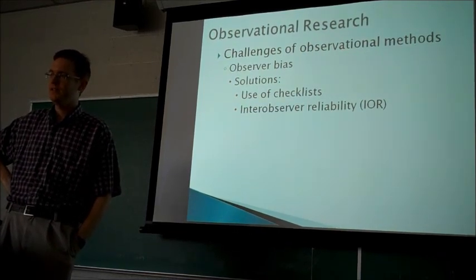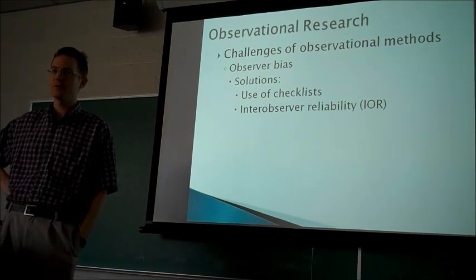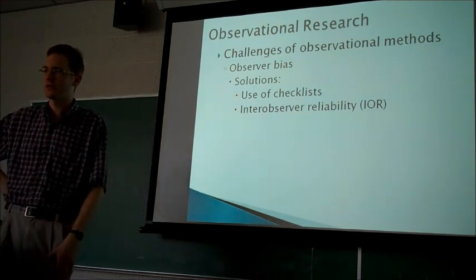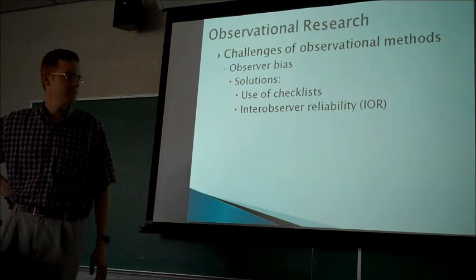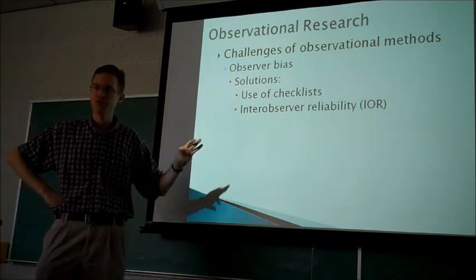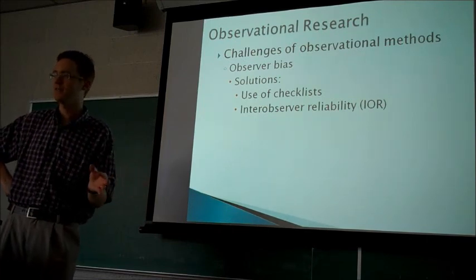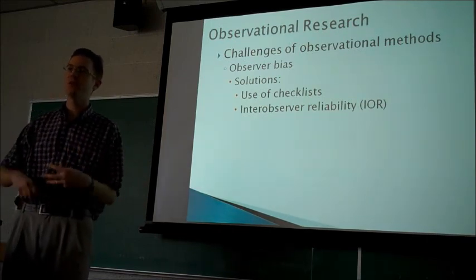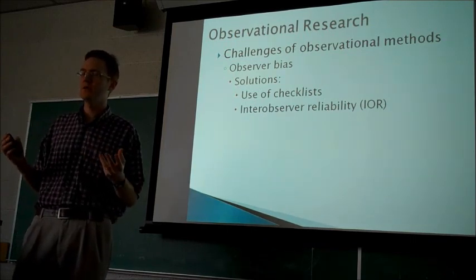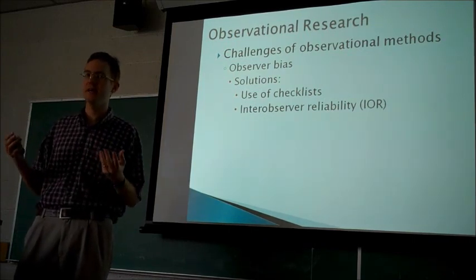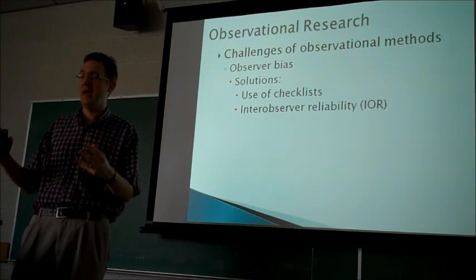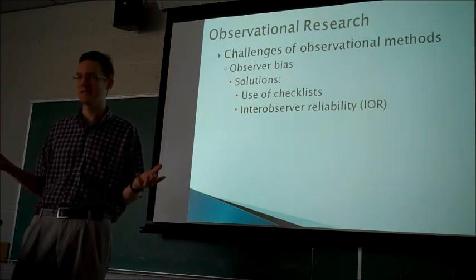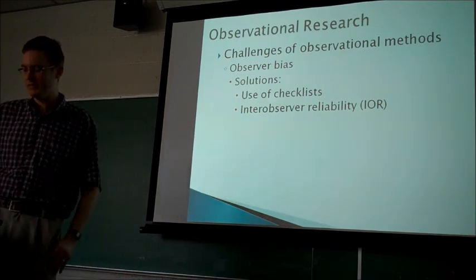Instead of just relying on one observer, a lot of these studies will have two, three, four, or even more observers. Then they'll see how strongly each observer's ratings correlate with the ratings of other observers. If there is a strong degree of agreement between the observers, that might serve as evidence that what they're reporting actually happened and isn't really a result of bias — unless they were all biased in the same way.